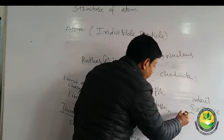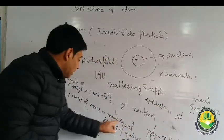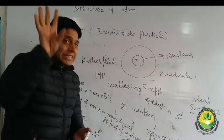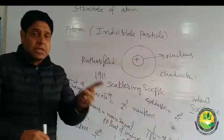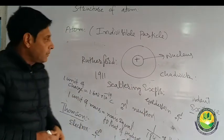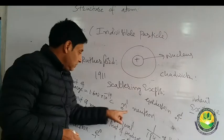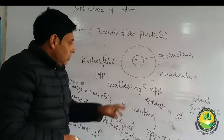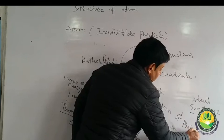Then Goldstein discovered that atom contains a proton. Proton is positively charged, carries one unit of charge, and its mass is one unit — equal to that of a hydrogen atom. So Rutherford discovered the nucleus with three characteristics: positively charged, denser in nature, and small in size. Chadwick discovered neutron, Thompson discovered electron, and Goldstein discovered proton.